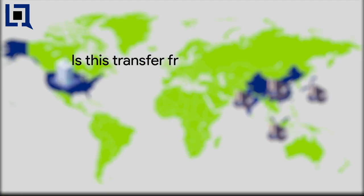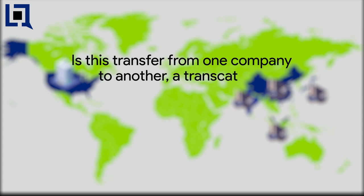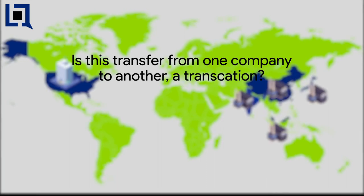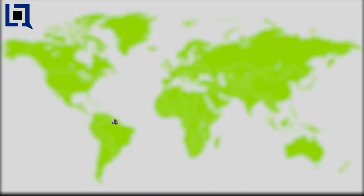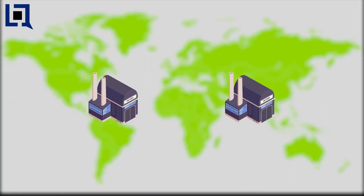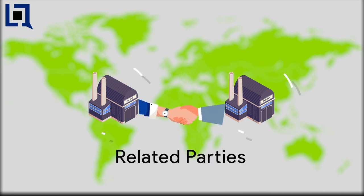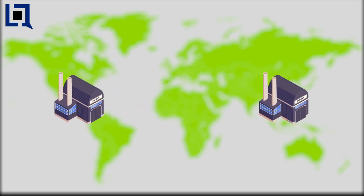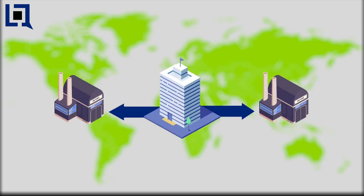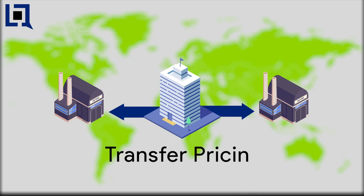Is this transfer from one company to another a transaction? The answer is yes. When the different branches, subsidiaries or units of a company enter into a business with each other, it is called a related party transaction, and the price at which these transactions are conducted is called transfer pricing.